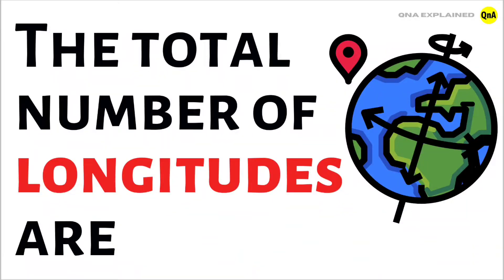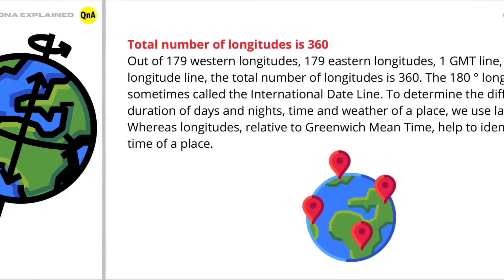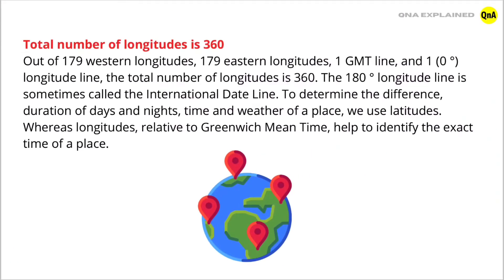The total number of longitudes is 360. Out of these, there are 179 western longitudes, 179 eastern longitudes, 1 GMT line, and 1 longitude line. The total number of longitudes is 360. The 180 degree longitude line is sometimes called the international date line.